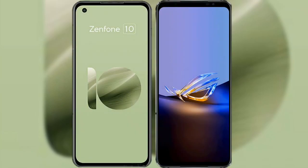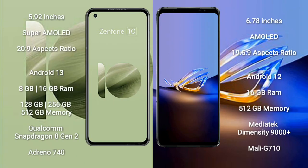I will compare the new Asus Zenfone 10 with the Asus ROG Phone 6D Ultimate. The Asus Zenfone 10 comes with a 5.92-inch Super AMOLED display and an aspect ratio of 20:9. The Asus ROG Phone 6D Ultimate comes with a 6.78-inch AMOLED display and an aspect ratio of 19.5:9.